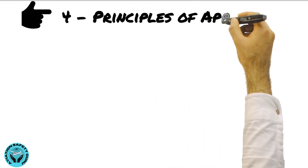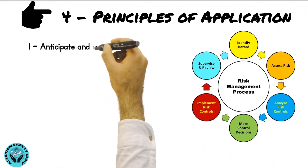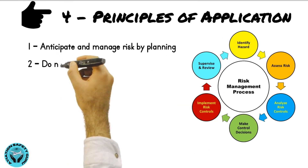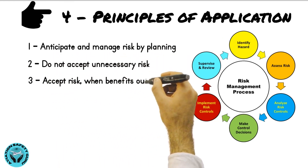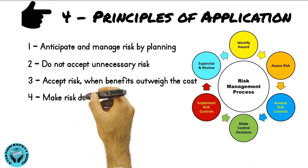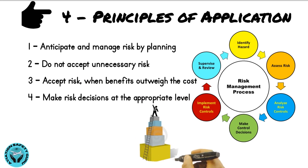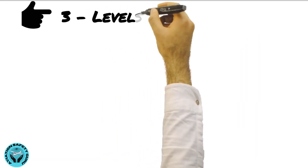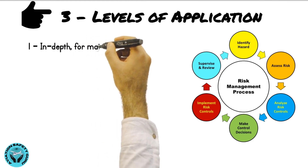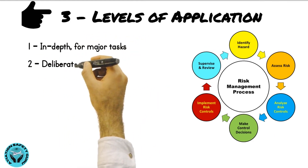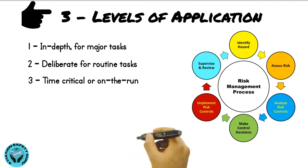Next come the four principles of application: anticipate and manage risk by planning; do not accept unnecessary risk; accept risk when benefits outweigh the cost; and make risk decisions at the appropriate level. Lastly, the three levels of application are: in-depth for major tasks, deliberate for routine tasks, and time-critical or on-the-run.